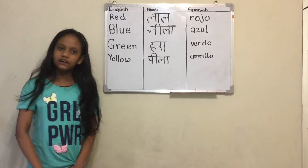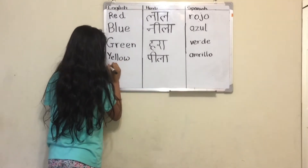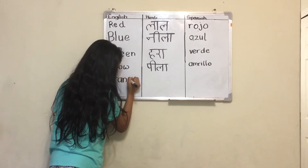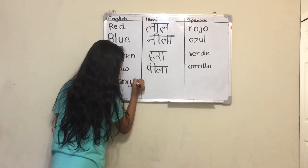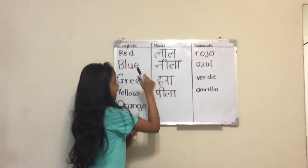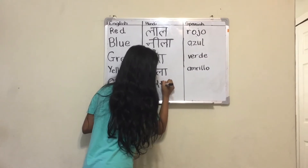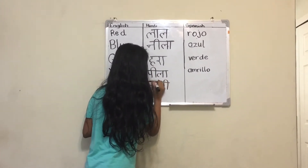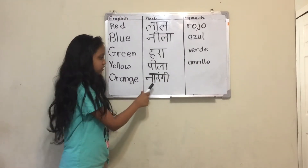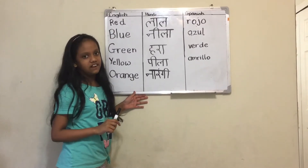Let's take a look at Orange. The spelling of Orange is O, R, A, N, G, E. In Hindi, Orange is Narangi.